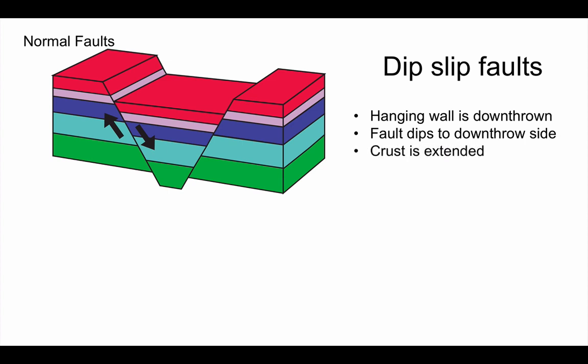And with this type of fault, the crust is extended. It's stretched a little bit. And that's because these type of faults are formed by tensional stress, pulling apart. The type of fault we might find, for example, at a constructive plate boundary or a divergent plate boundary.